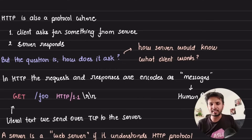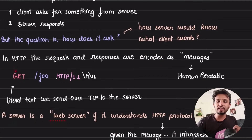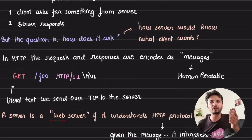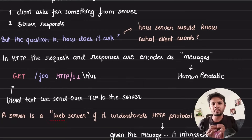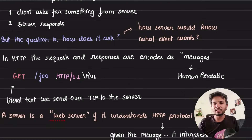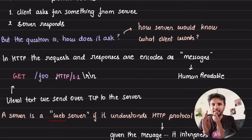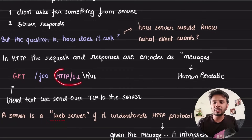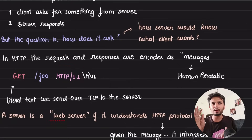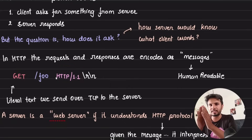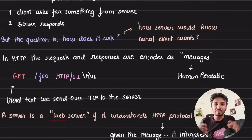The HTTP specification says the first thing you pass is the HTTP method — the verb: GET, PUT, POST, DELETE — followed by a space, followed by the URL (e.g., /foo), followed by a space, followed by the HTTP protocol version (HTTP/1.1), followed by \r\n.